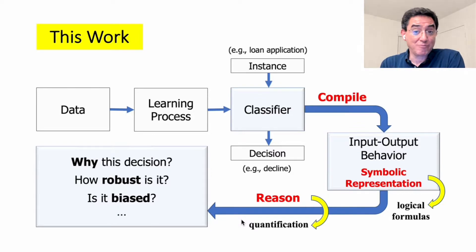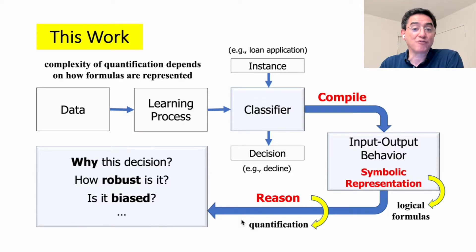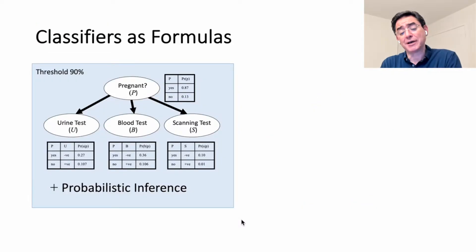There is a computational component to this theory, and it takes the form of studying the complexity of quantification. But let's take a concrete example first. We have a classifier here, which is a Naive Bayes classifier. It has three features, a class variable. We typically compute posterior on the class variable, check against threshold, and then decide whether to classify a patient as pregnant or not.